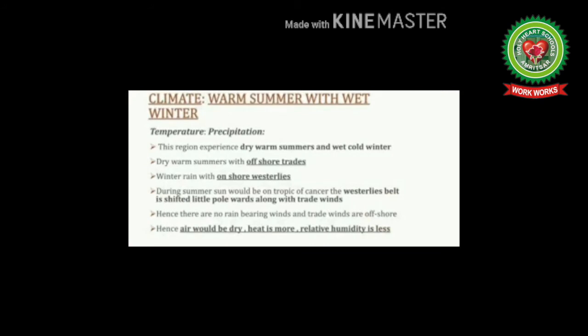The next point is climatic conditions. Regarding temperature, the Mediterranean type of climate has hot dry summers and mild wet winters. The summers are hot with an abundance of sunshine; the mean summer temperature is about 25 degrees Celsius. Relative humidity is low in summers, so summers are never uncomfortable. Coastal areas are cooler than the interiors due to the influence of cool ocean currents. Clear skies encourage rapid radiation from the surface at night, so nights are cool in summer. This region is influenced by trade winds in summer, which blow from land and thus do not bring rainfall.